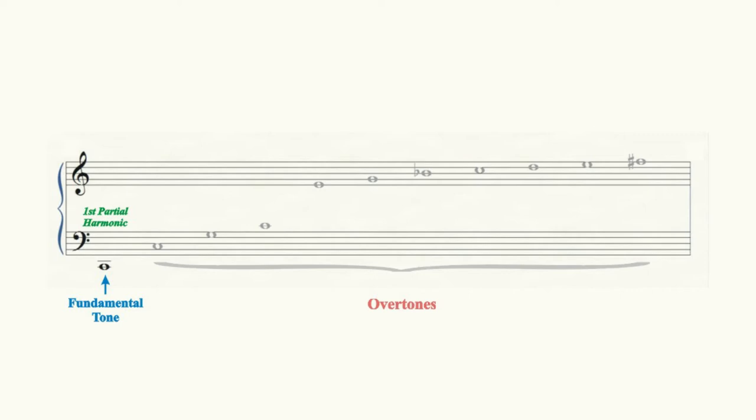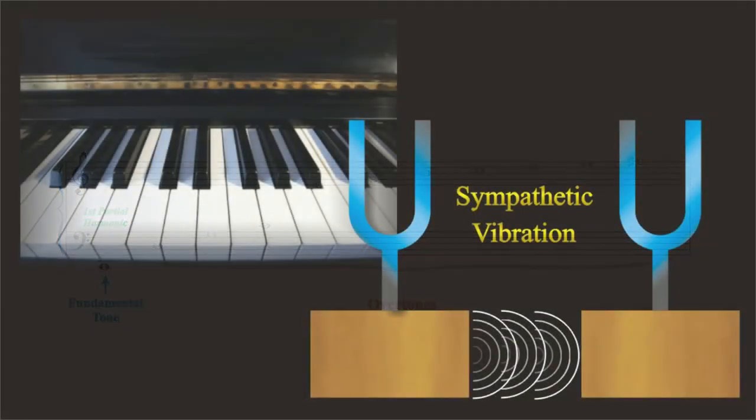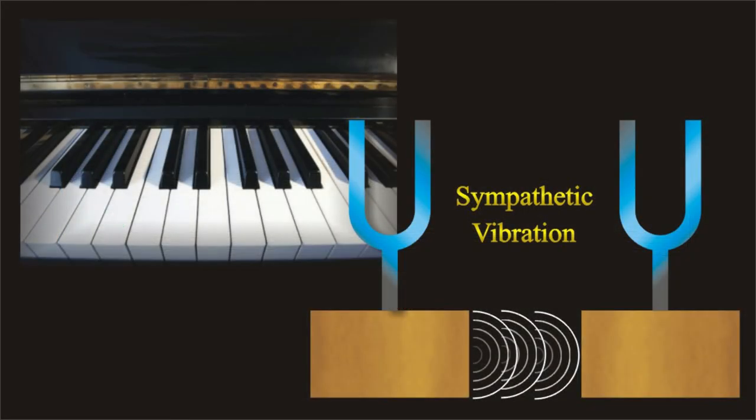How, then, shall we demonstrate the existence and arrangement of overtones that are nearly, or in some cases completely, inaudible to the ear? As it happens, we can make use of the piano and a principle known as sympathetic vibration to provide evidence for their existence and order of occurrence.